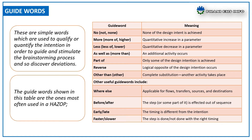Further guide words include: PART OF — only some of the design intention is achieved; REVERSE — the logical opposite of the design intention occurs; OTHER THAN — complete substitution, where another activity takes place, an unusual activity occurs, or an uncommon condition exists. Other useful guide words include WHERE ELSE, BEFORE/AFTER, and OUT OF SEQUENCE.